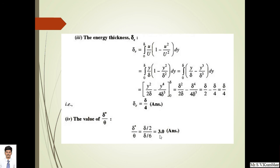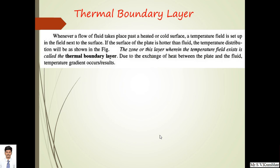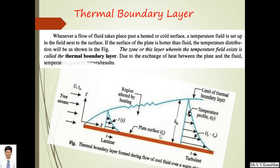Now we will start with thermal boundary layer. I hope you have learned the hydrodynamic boundary layer and its development over a flat plate and through a circular cylinder. Very similarly, we have to learn thermal boundary layer. Whenever a flow of fluid takes place past a heated or cold surface, there are two cases: any fluid may flow over a hot surface, or hot fluid may flow over a cold surface. Because of that, a temperature field is set up next to the surface. If the plate is hotter than the fluid, the temperature distribution is shown in this figure.